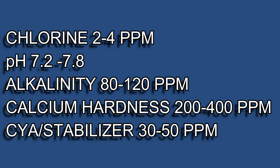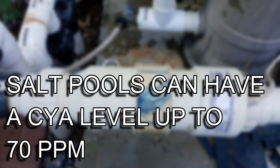Chlorine should be kept at 2 to 4 parts per million. pH is 7.2 to 7.8. Your alkalinity is 80 to 120 parts per million. Calcium hardness is 200 to 400 parts per million, and your stabilizer or CYA is 30 to 50 parts per million, with salt pools going up to 70 parts per million.